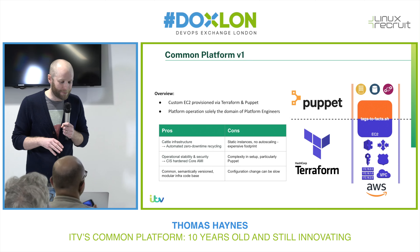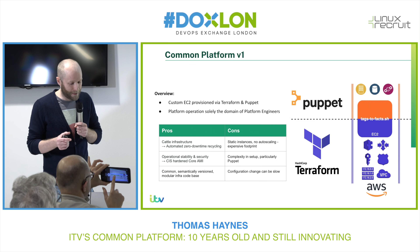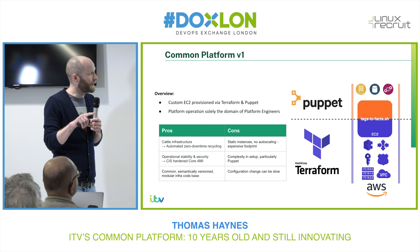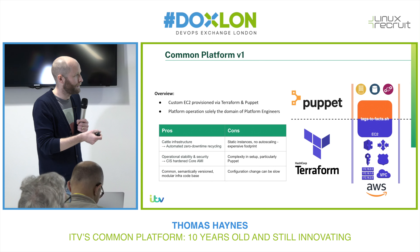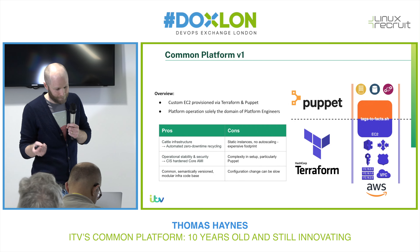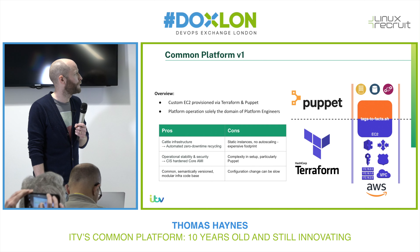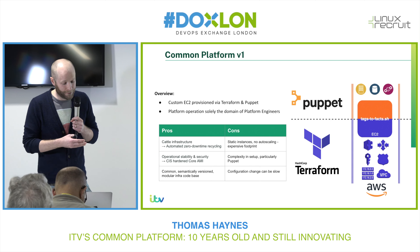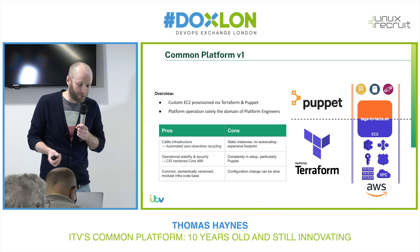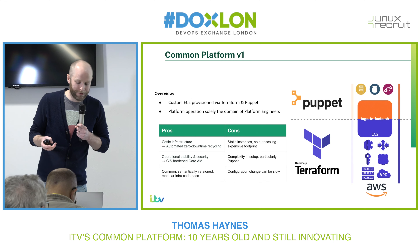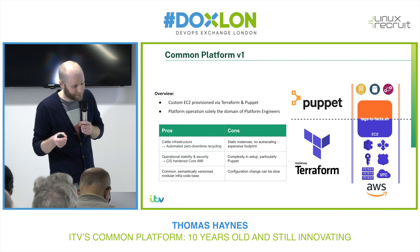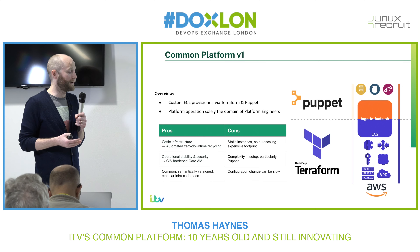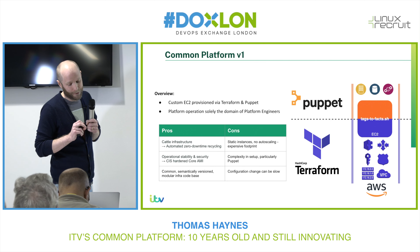In its first conception, the platform was very much based on configuration-managed EC2 instances provisioned by Terraform and Puppet. Terraform would provision all the underlying infrastructure up to the EC2 and then pass the baton to Puppet, which would configure the instance into whatever it was going to be. There was a lot that was good about this — we always treated our infrastructure as cattle, with automated zero-downtime recycling jobs. It was very stable, quite secure, and we used the same hardened AMI across the estate. The issues were that it was quite static in terms of instances — we couldn't auto scale, it was quite an expensive footprint, and the Puppet configuration was quite complex and hard to push change through.